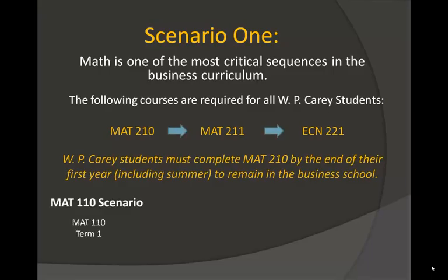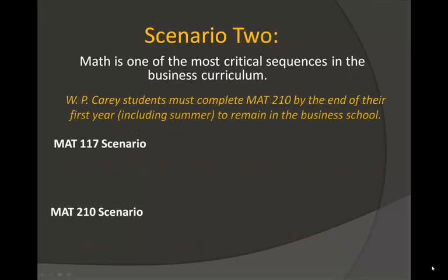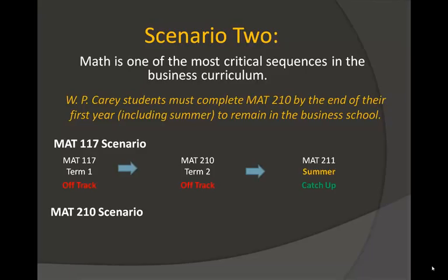Students that begin in Math 110 should take Math 117 in their second semester and will be required to complete Math 210 in summer in order to remain in the business school. Your MyASU will continue to say you are off track until Math 210 is completed. Students that begin in Math 117 should take this class in their first semester and complete Math 210 in their second semester. These students will then have the option of taking Math 211 in summer to get back on track.